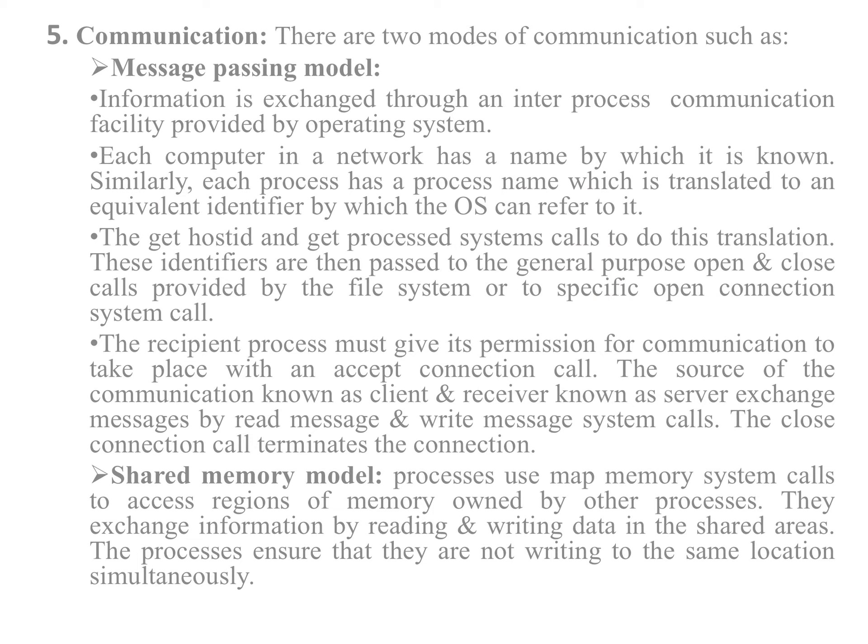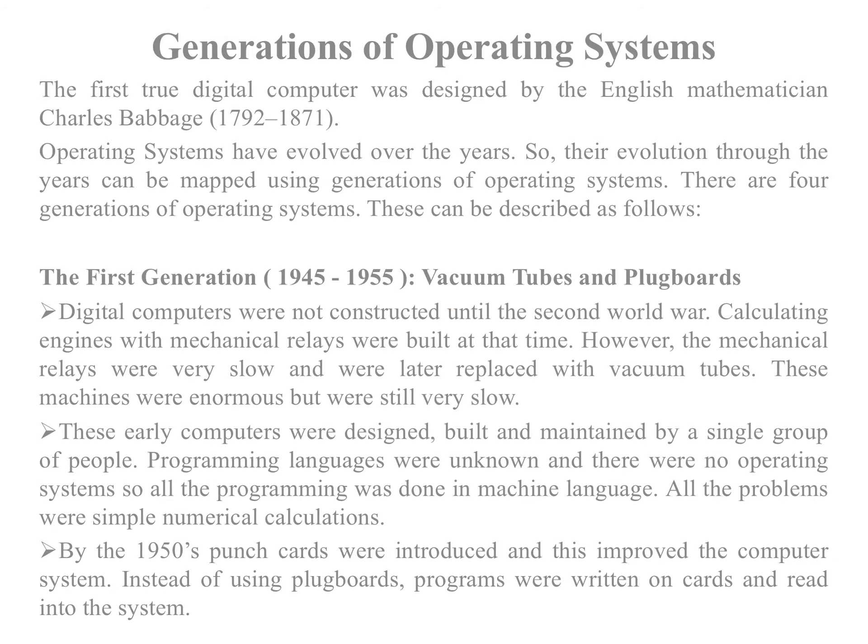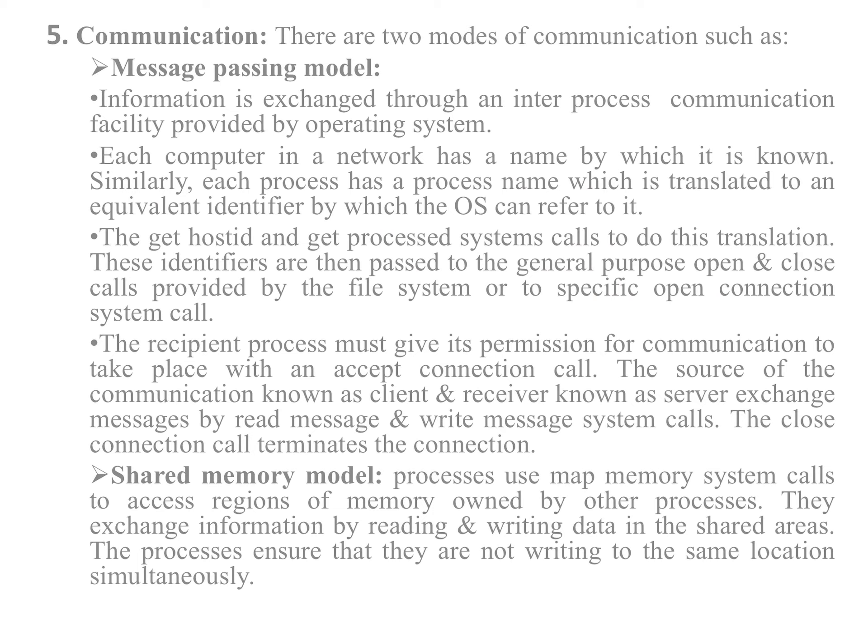In the shared memory model, a process uses map memory system calls to access a region of memory owned by another process. They access information by reading and writing data in the shared areas, ensuring they are not writing to the same location simultaneously. These are the five basic categories of system calls which interface between the process and the operating system.